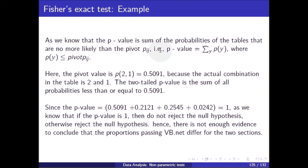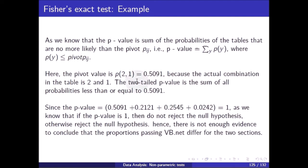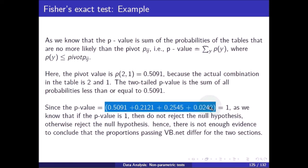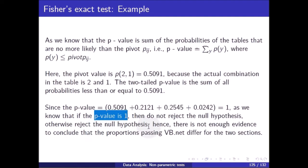The p-value is the sum of probabilities of tables no more likely than the pivot p_ij (0.5091). All computed probabilities — 0.0242, 0.2545, 0.5091, and 0.2121 — are less than or equal to 0.5091, so the p-value is 0.0242 plus 0.2545 plus 0.5091 plus 0.2121 equals 1. Since p-value equals 1, do not reject the null hypothesis. There is not enough evidence to conclude that the proportions passing VB.NET differ for the two sections.